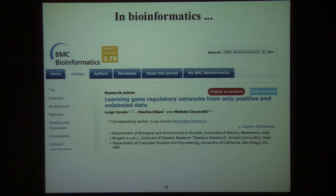That paper asks: can we model the probability of presence of species without absence data? There's also an application in bioinformatics: gene regulatory networks are of great interest, and colleagues Luigi Cerullo and Michele Ciaccarelli in Italy were interested in estimating gene networks as accurately as possible when you only have positive information — this gene or protein does regulate this other gene — but it's much harder experimentally to obtain the negative data that this protein clearly does not regulate this gene. This was published in BMC Bioinformatics a couple of years ago.